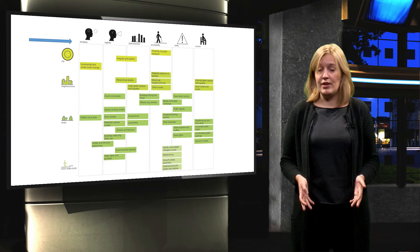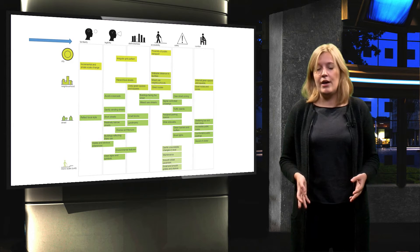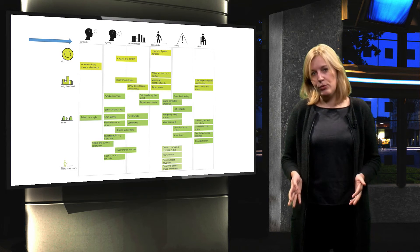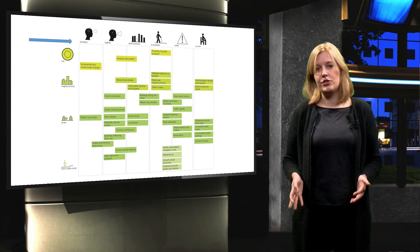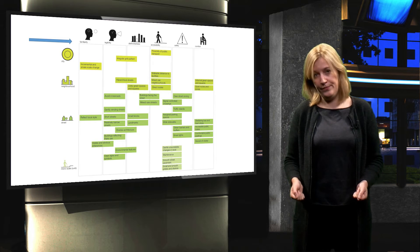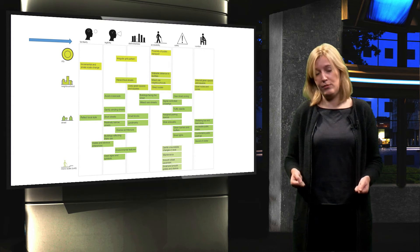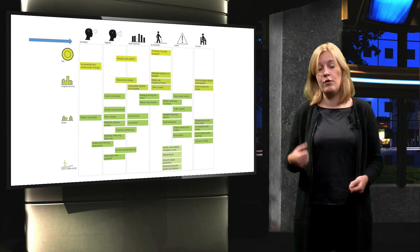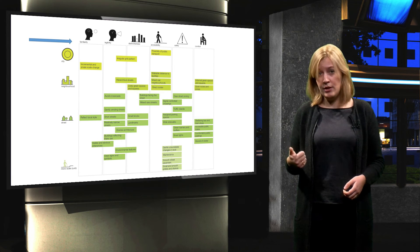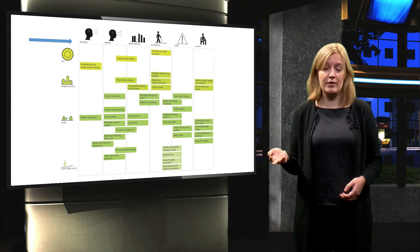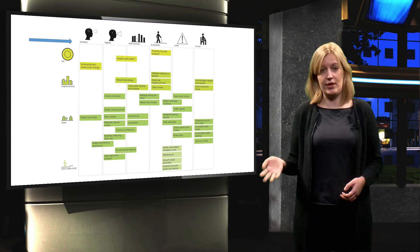In the literature research I have done, I found 39 different neighbourhood design interventions that encourage active ageing. These design interventions can be divided into six interrelated themes: familiarity, accessibility, distinctiveness, legibility, comfort and safety.